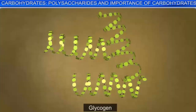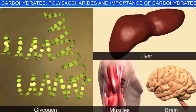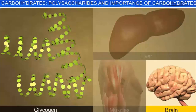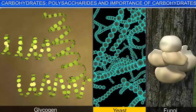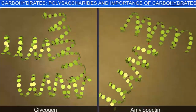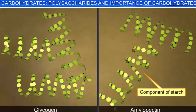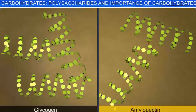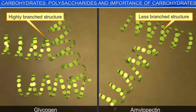The polysaccharide glycogen is the form in which carbohydrates are stored in animals. It is present in the liver, muscles, and brain. Glycogen is also found in yeast and fungi. The structural aspects of glycogen are much similar to amylopectin, a component of starch; hence it is referred to as animal starch. The structure of glycogen differs from that of amylopectin in that the molecules of glycogen have a greater degree of branching.